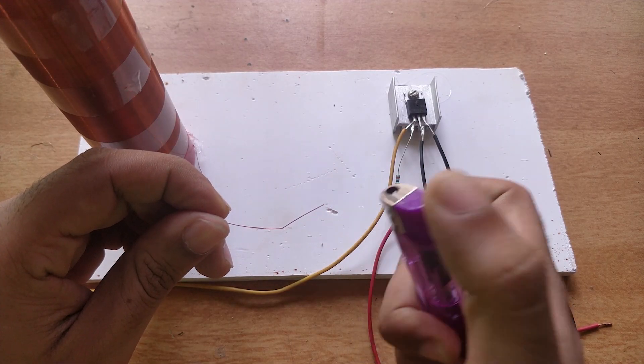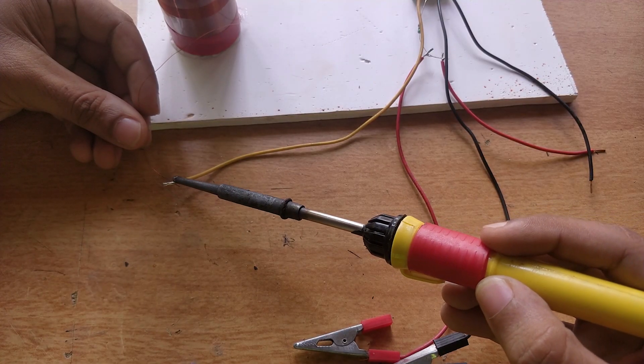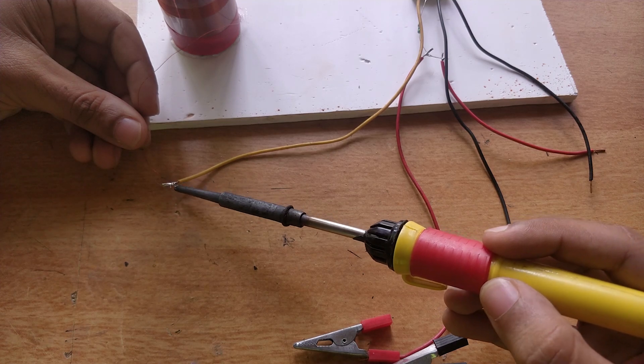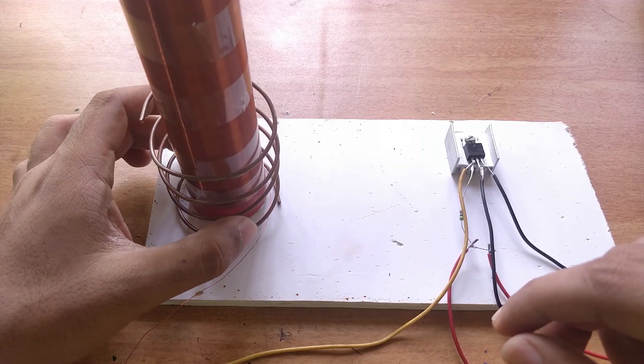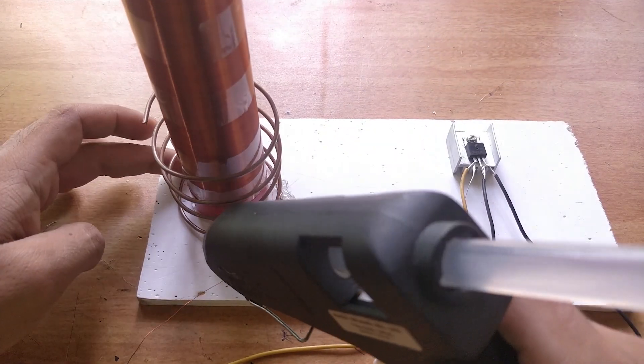Now let's attach our secondary coil to the circuit. Now mount the primary coil on our platform and let us begin by adding three turns on the primary coil.